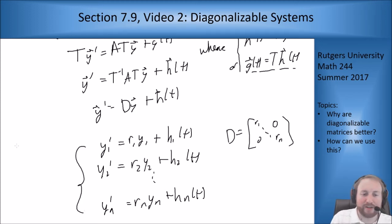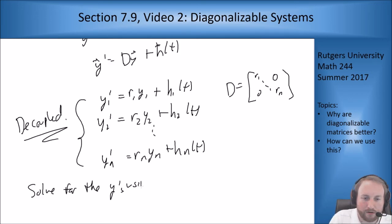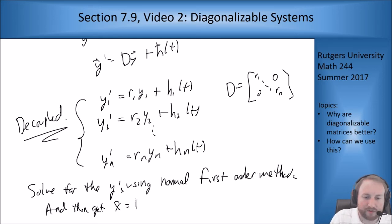So if you look at this again, this is entirely decoupled. So we can use normal first order linear equation methods. This is going to be non-homogeneous so it's going to have this integrating factor and integrate both sides, that kind of thing. We can solve for the y's via normal first order methods, and then get x equals Ty. So once I find y I multiply by my same T again to get x.